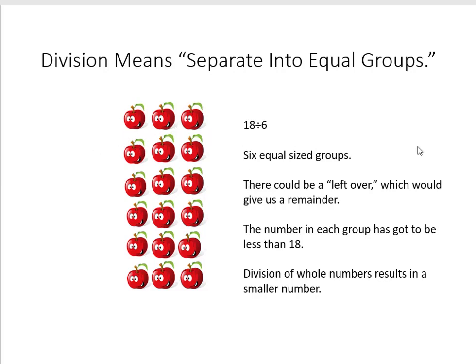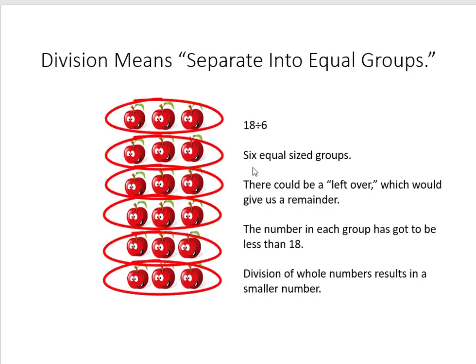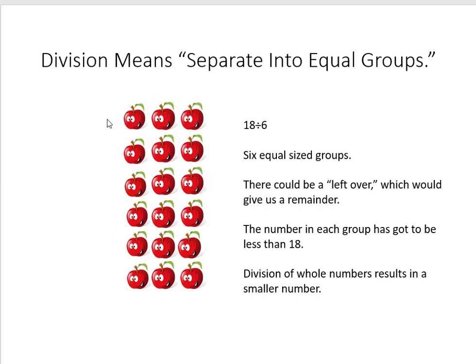First of all, the number in each group has got to be less than 18. And more generally, division will always result in a smaller number, unless of course you're dividing by 1, which is a sort of special case where you're not really doing anything. Here, 18 divided by 6 is 3 because when we divide 18 apples into 6 equal groups, there are 3 apples in each group with no apples left over.